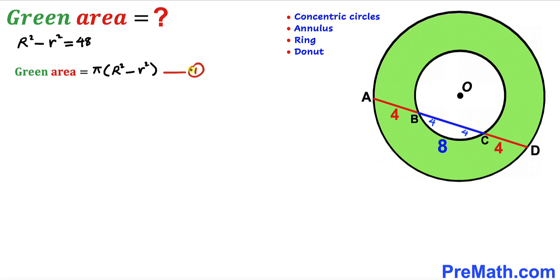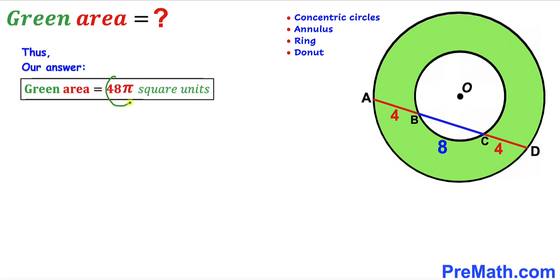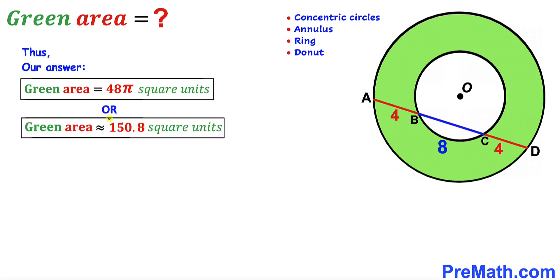For the final step, we return to equation 1: green area = π(R² − r²). Substituting R² − r² = 48, the green shaded area equals 48π square units. In decimal form, this is approximately 150.8 square units.